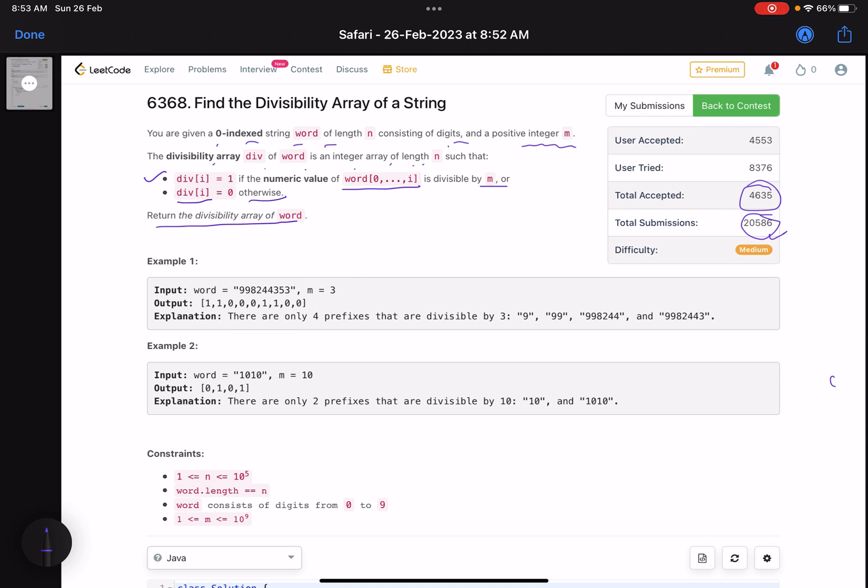What the problem is saying: you are given a string like in this case it's 998244353. You have to return an array of this size only, where the values in this array depend on the prefix at each index i. For the first character, the string being formed is 9. Is 9 divisible by m? M here in this case is 3. If it is divisible, put 1 here, else put 0.